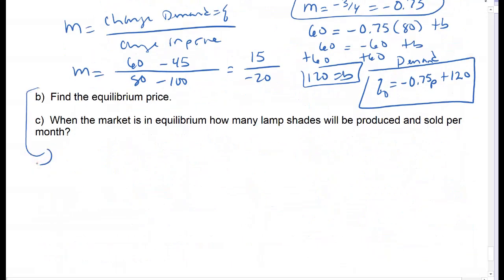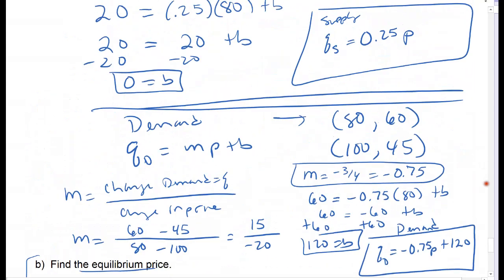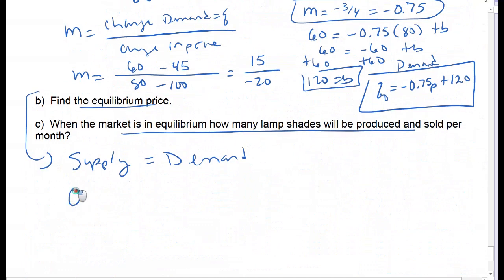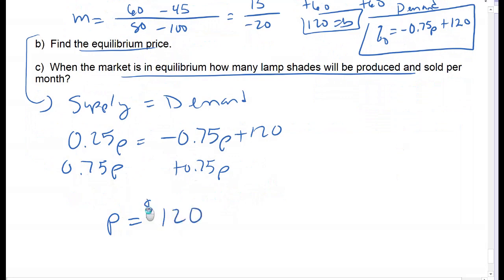Now we're going to find equilibrium. Remember, equilibrium is when supply equals demand. So my supply equation 0.25p equals my demand equation negative 0.75p plus 120. Add 0.75p to both sides: that comes out to 1p equals 120. So my equilibrium price is $120 per lampshade.